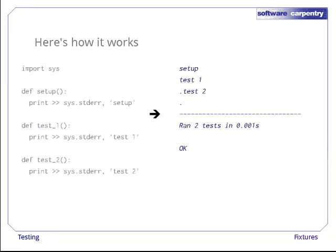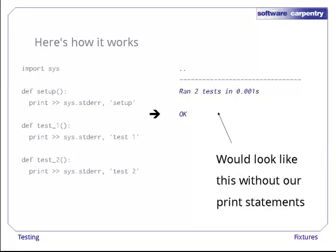When we run this file with the nosetests command, it produces this output. The stuff shown in blue is Nose's regular output. Our print statements are interleaved with it, which makes things a bit hard to read. So this is what Nose's regular output would look like without our print statements.